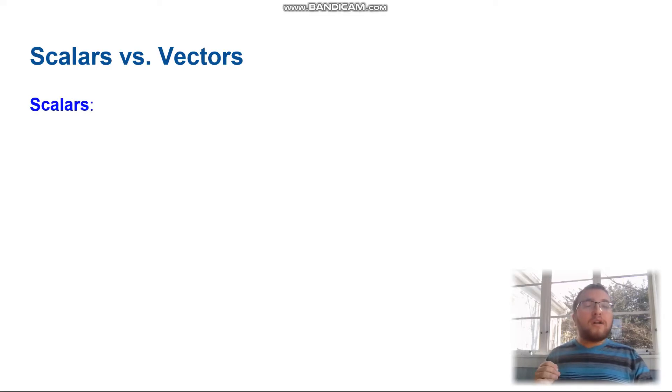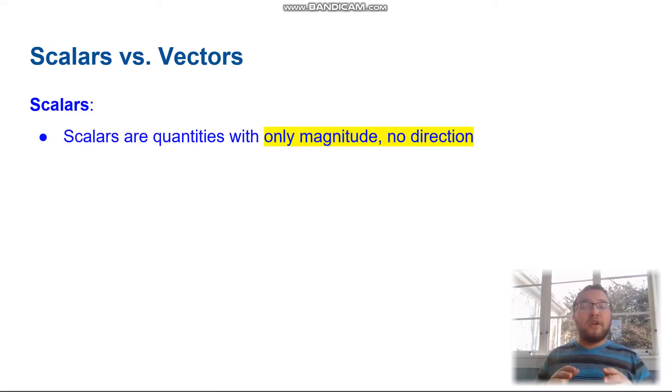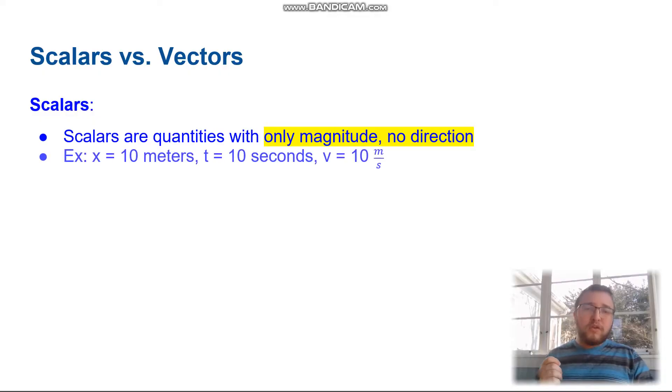Now scalars are quantities with only magnitude and no direction. They only have a value. That could be something like 10 meters or 10 seconds, or a speed of 10 meters per second. Notice that none of those specify what direction. I'm not saying 10 meters to the left or right, I'm just saying 10 meters. They still have units, but they don't have direction.